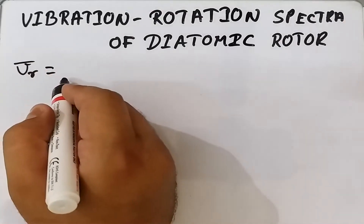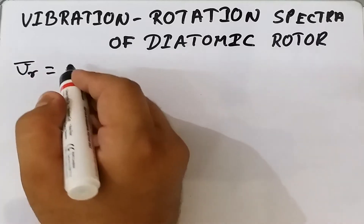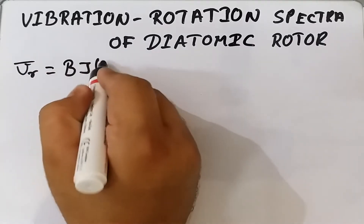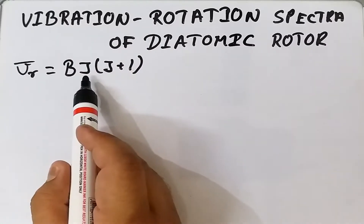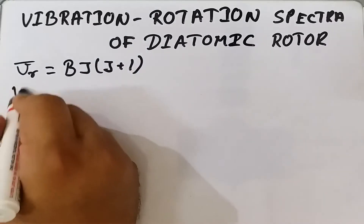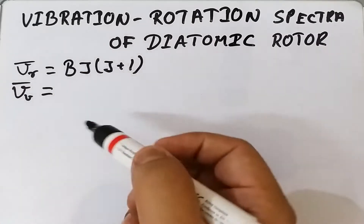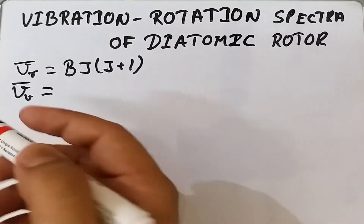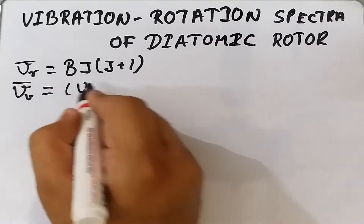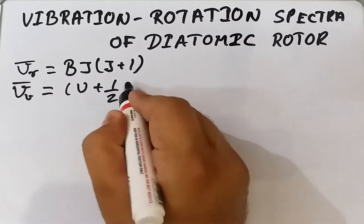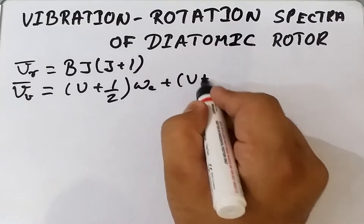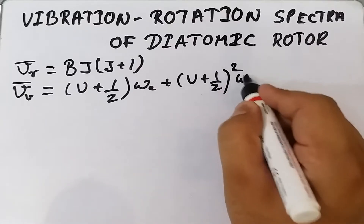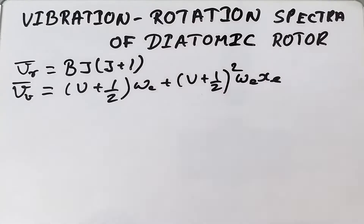The energy in wavenumbers for rotational spectra is given as ν̄_r = BJ(J+1), where B is the rotational constant and J is the rotational quantum number. For vibrational spectra with anharmonic motion, the energy is: (v + 1/2)ωe + (v + 1/2)² ωe·xe.